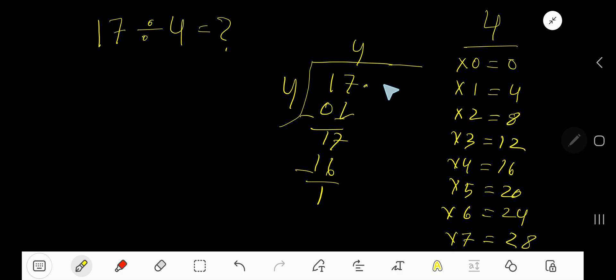Bring down the first zero, but before the zero there's a decimal. The decimal must come to the quotient directly. 4 goes into 10 how many times? 4 goes into 10 two times. 2 times 4 is 8. Subtract and bring down another 0.